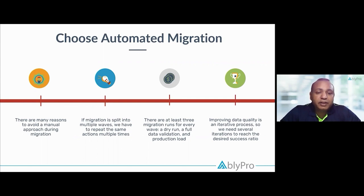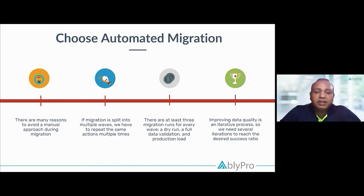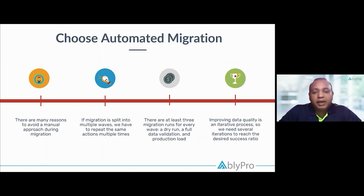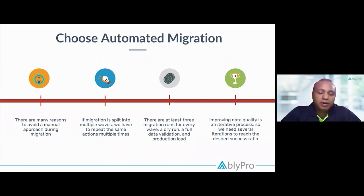Since there are three stages, it's always good to automate so that the same things can be repeated across all three phases or waves. Otherwise, you end up writing different scripts for different migrations and running them manually, which multiplies the effort three or four times if you don't automate your migration.